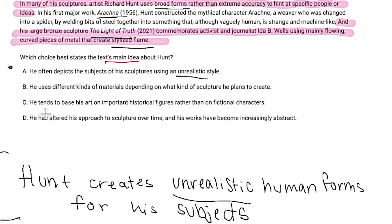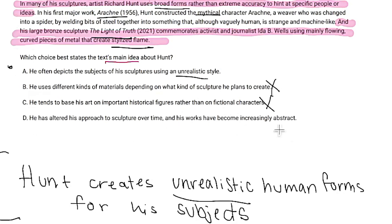Unrealistic — that's good. Let's see what the other choices are. B says: He uses different kinds of materials depending on what sculpture he plans to create. That might be true, but it's not mentioned in the first or last sentence, so we can't say that's the main idea. C says: He tends to base his art on important historical figures rather than on fictional characters. But we read about the mythical character Arachne — definitely not historical figures. D says: He has altered his approach over time and his works have become increasingly abstract. We know it's abstract, but we don't know if it's over time — so we can't prove that. And A super matched our annotation, so it's A.